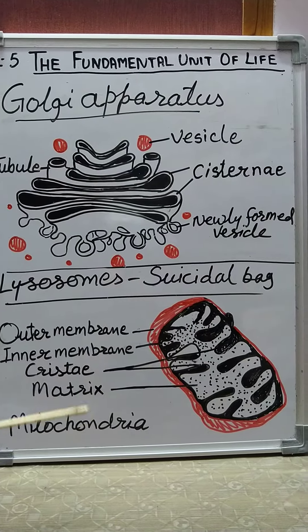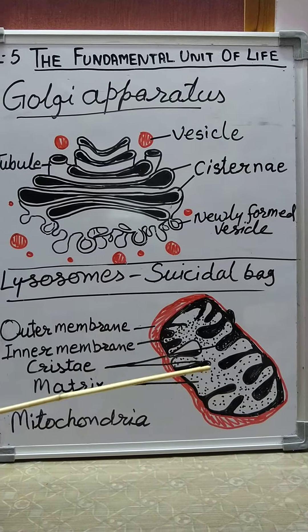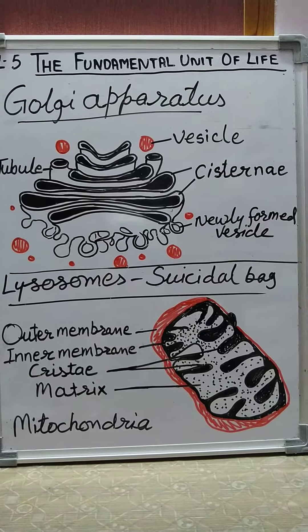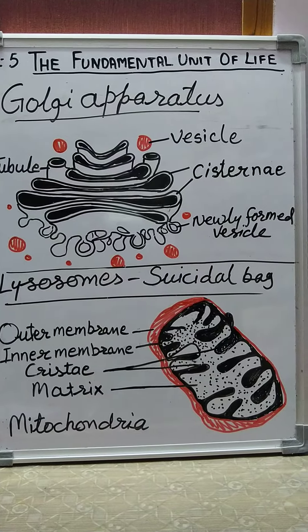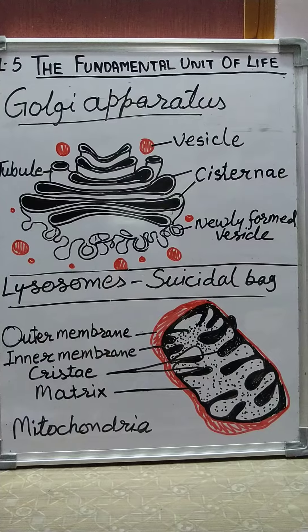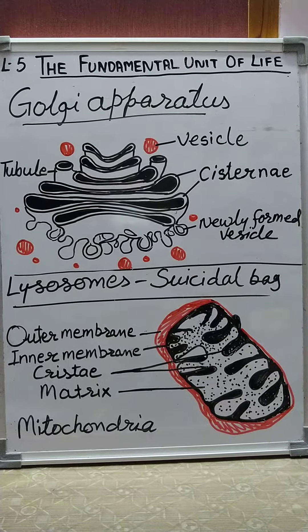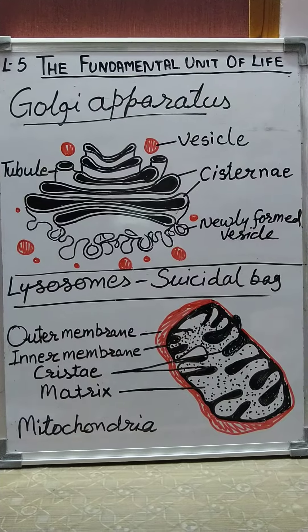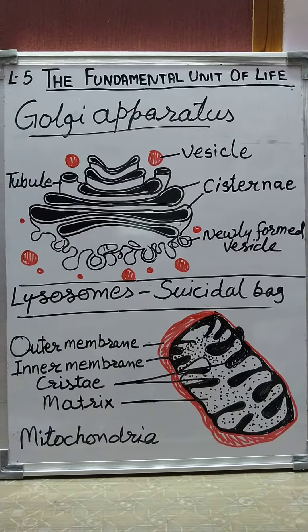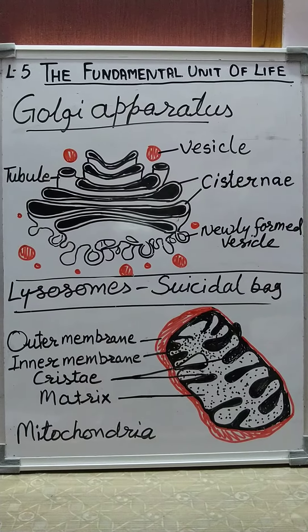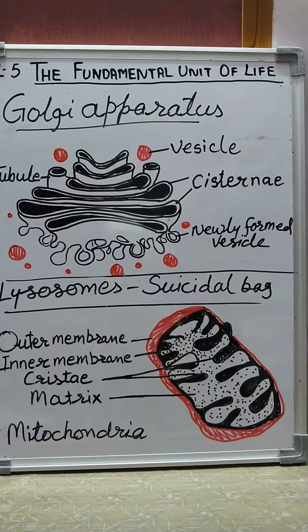The matrix of the mitochondria contains RNA, DNA, proteins, lipids, and more. The main function of mitochondria is oxidation of food and storing energy in the form of ATP, which stands for adenosine triphosphate. Along with ATP formation, it also synthesizes proteins and lipids.